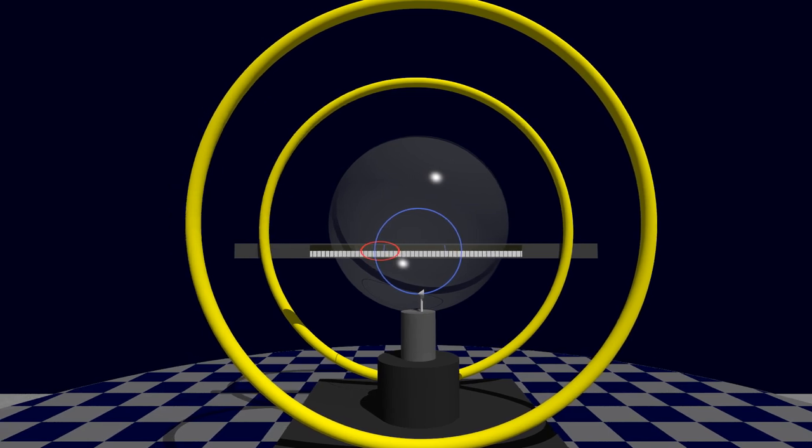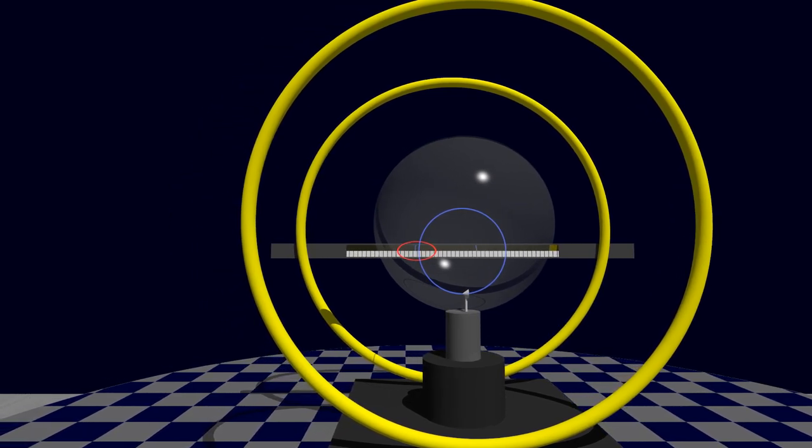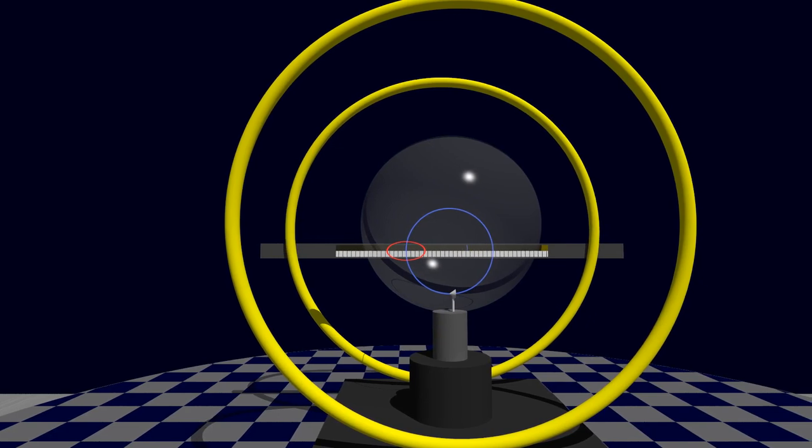Second, using only one eye, carefully align your viewpoint so that the left side of the circular beam overlaps its reflection. Then you can take the reading of the apparent position of the left side of the circle on the scale.